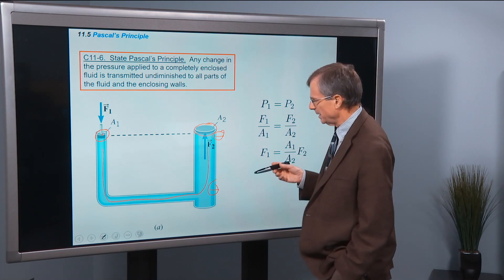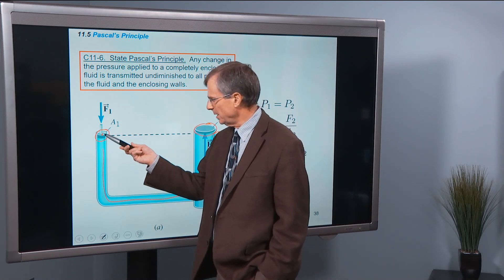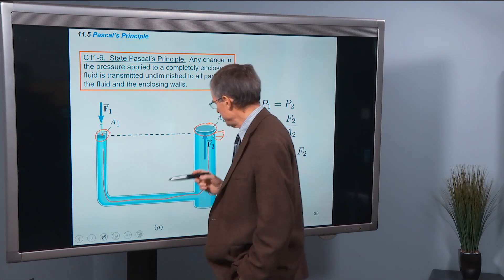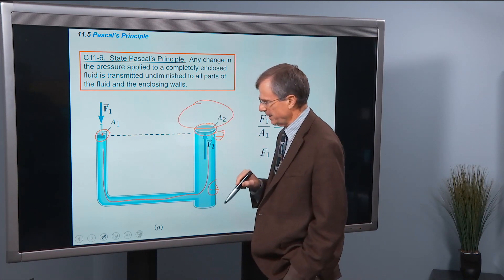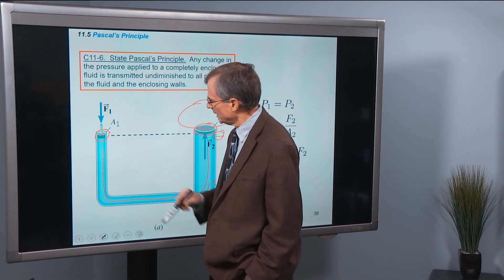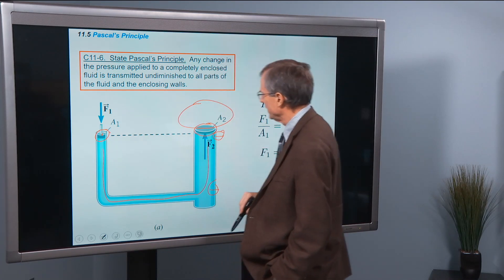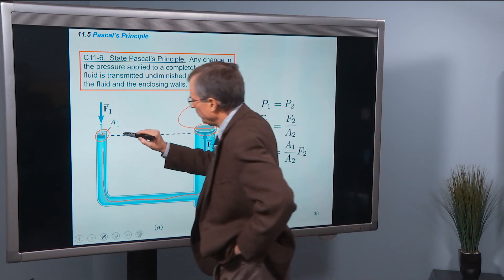So here's the idea. If I have a piston here with a small area, I'm going to imagine lifting a large object here on this end by pushing on this small end. If I can exert a force and increase the pressure here, then we know that pressure at point P1 here is the force that I'm applying on this piston.